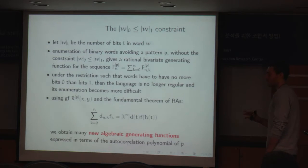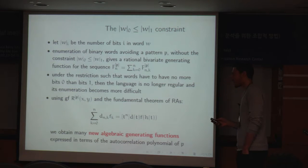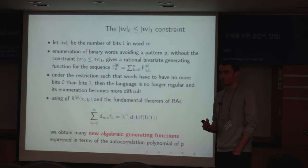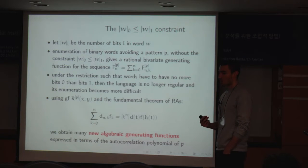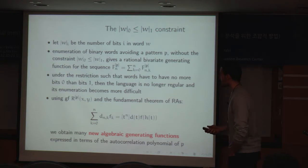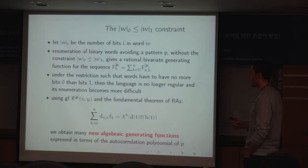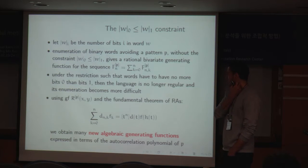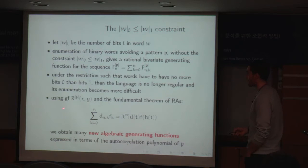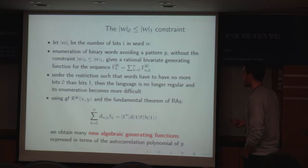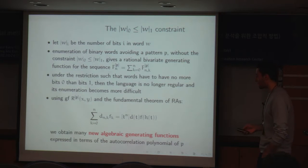Enumeration of the language introduced so far gives a rational bivariate generating function. Now we would like to require an additional constraint on the content of each word: every word cannot contain more 0s than 1s. Enumeration of this new language is no longer regular and becomes more difficult. To solve the problem, we use the generating function R and a fundamental theorem to obtain new algebraic generating functions, always expressed in terms of the autocorrelation polynomial.